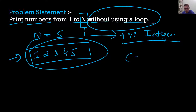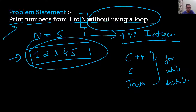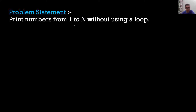If we're using C++, C, or Java, these three languages offer us a for loop, a while loop, and a do-while loop. To solve this problem, we are not allowed to use these loops, so we have to solve this problem without using a loop.